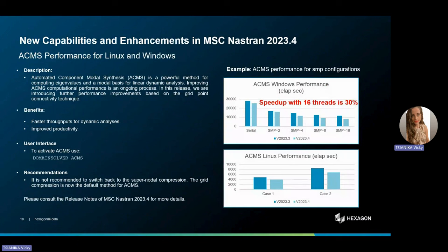Finally, we're introducing significant performance enhancements in our fast eigenvalue solver called ACMS — Automated Component Model Synthesis — which is an embedded feature in MSC Nastran. It is designed to boost productivity by accelerating your simulations. The introduction of the grid compression method results in an impressive 30% speedup when utilizing 16 cores. The user interface is straightforward and no additional user action is required. The user simply has to use domain solver ACMS to take advantage of these latest improvements.